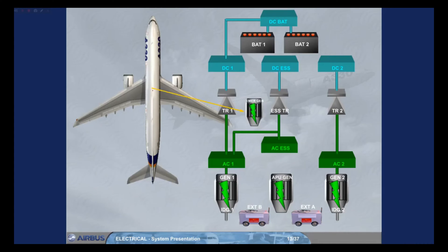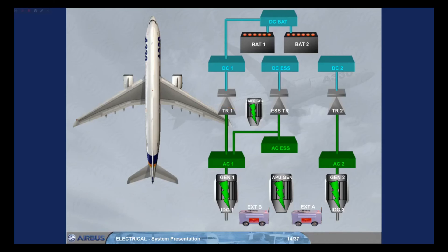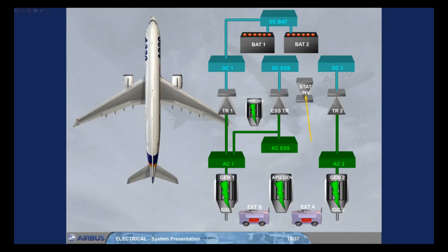It is powered by the green hydraulic system. The green system can be supplied by a RAM air turbine, RAT, which extends in case of severe hydraulic failures. The RAT is located under the right wing. A static inverter allows part of the AC electrical network to be supplied from the main batteries, batteries 1 and 2.